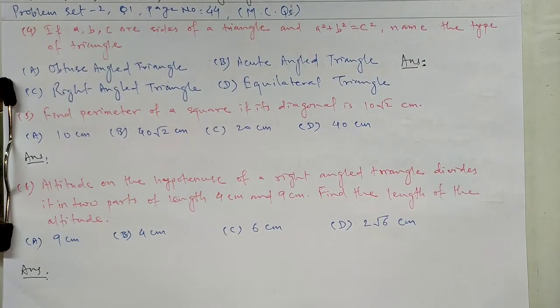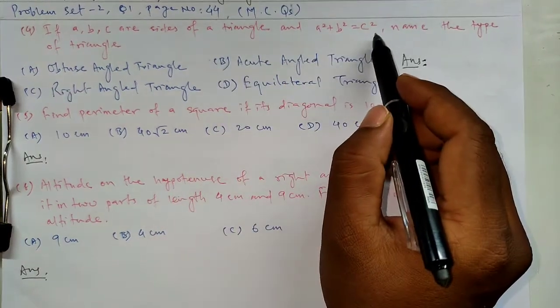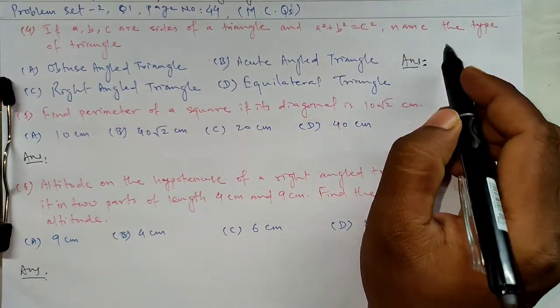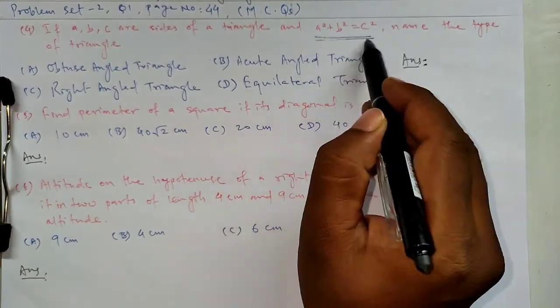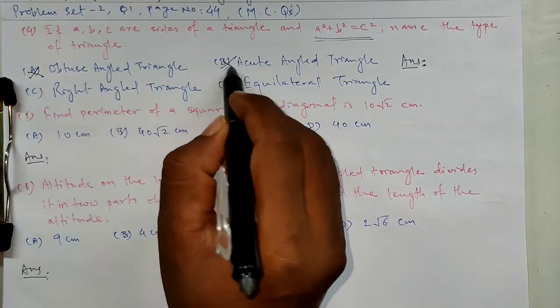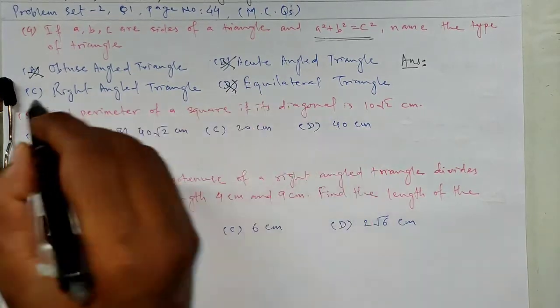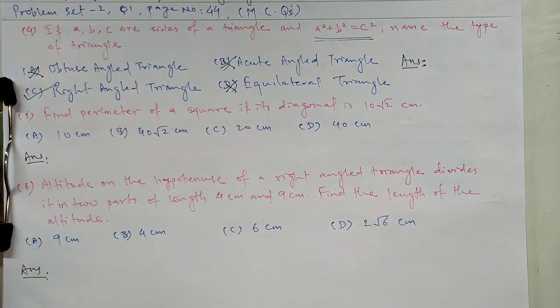Question number 4. In a triangle, if a square plus b square is equal to c square, then the type of the triangle? This equation is famous for right angle triangles, not for acute or equilateral. So right angle triangle.